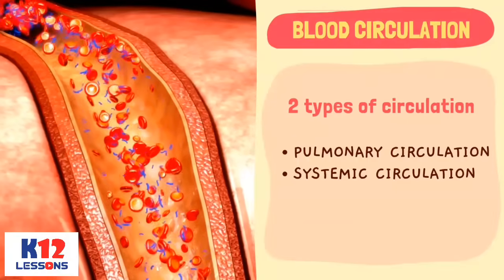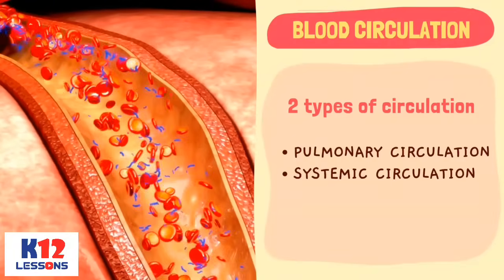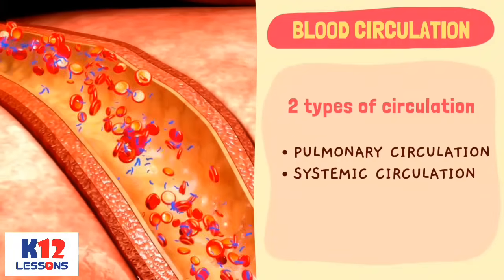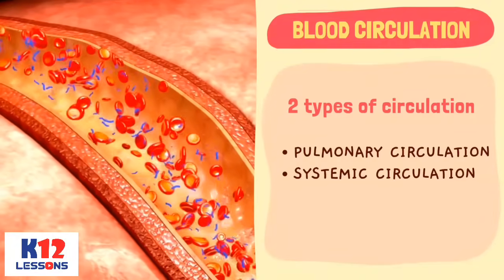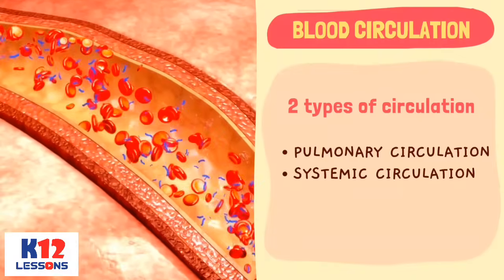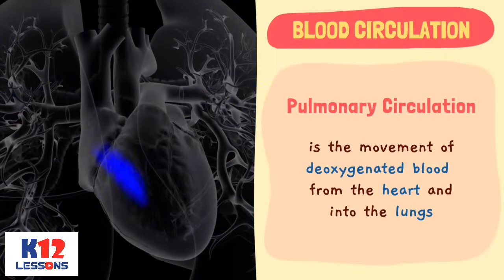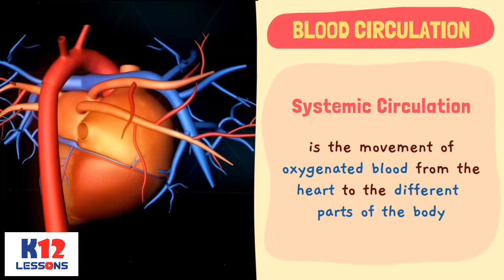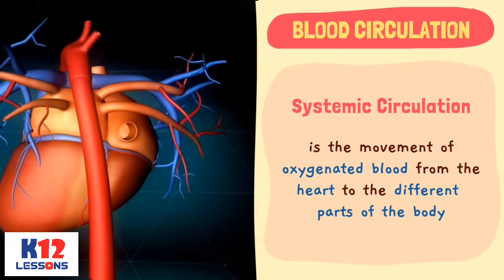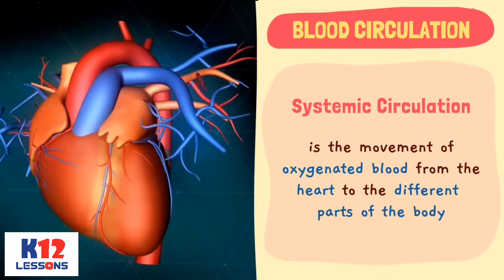The circulatory system has two types of circulation: pulmonary circulation and systemic circulation. The pulmonary circulation is the movement of deoxygenated blood from the heart into the lungs. The systemic circulation is the movement of oxygenated blood from the heart to the different parts of the body.